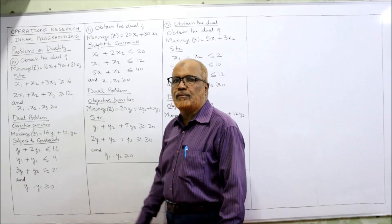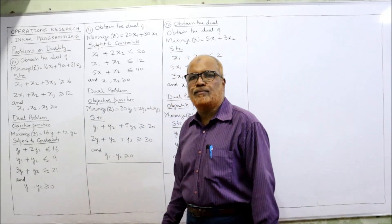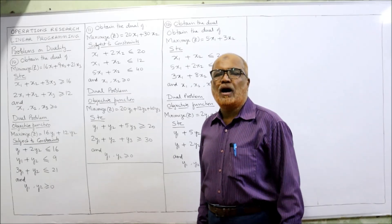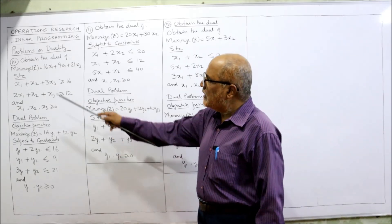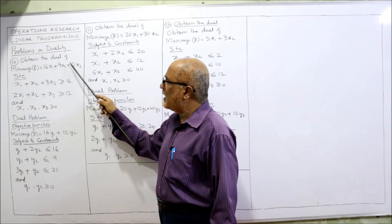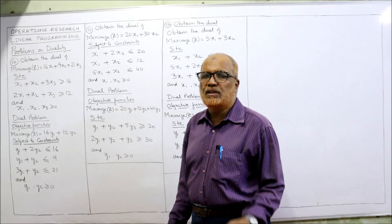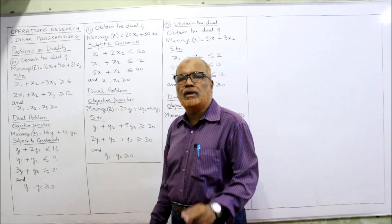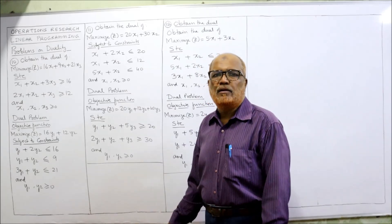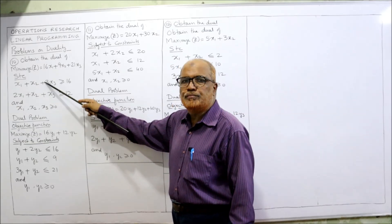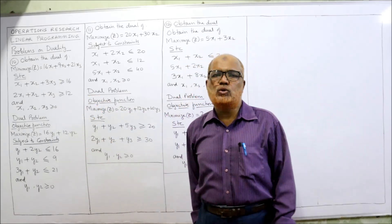The number of variables in the primal equals the number of constraints in the dual. There are three variables (X1, X2, X3), so there are three constraints in the dual. The restrictions of the dual are the coefficients of the primal objective function: 16, 9, 21. So the constraints are: Y1 + 2Y2 ≤ 16, Y1 + Y2 ≤ 9, and 3Y1 + Y2 ≤ 21. There are two primal constraints, so the dual has two variables: Y1 and Y2.